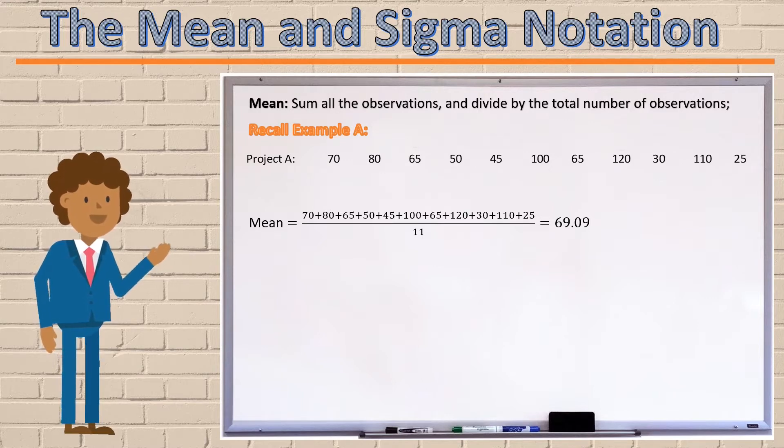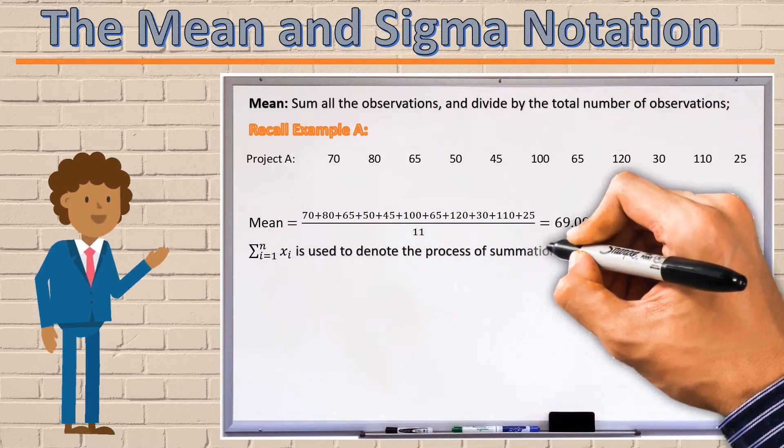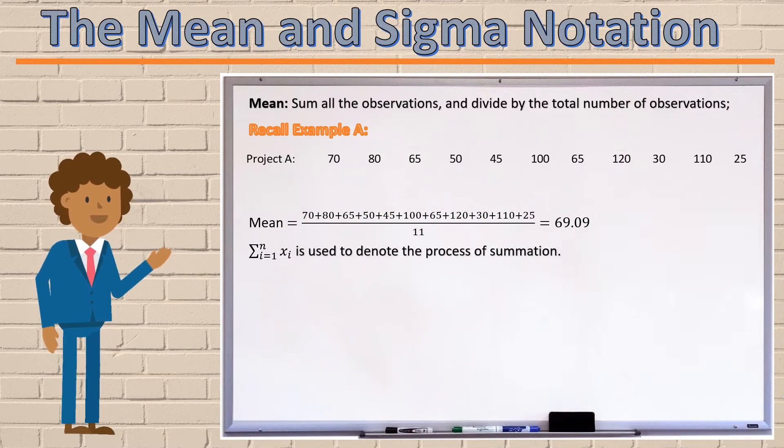The formula for the mean can be expressed quite compactly using sigma notation. The Greek symbol, capital sigma, is used to denote the process of summation or adding up.